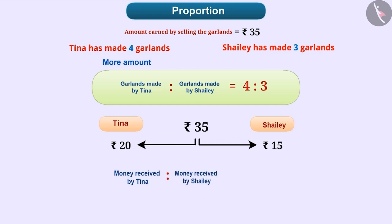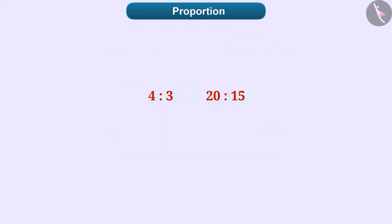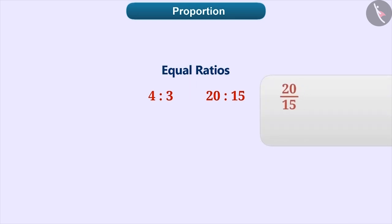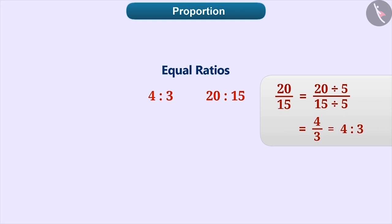Hence, the ratio of the amount received by Tina to the amount received by Shelly is 20 is to 15. Are the ratios 4 is to 3 and 20 is to 15 equal? Absolutely correct. If we divide the numerator and the denominator of 20 is to 15 by 5, then we get the ratio 4 is to 3. Therefore, we can say that 4 is to 3 and 20 is to 15 are equal ratios. That means they are in proportion. So, we can write the proportion as: 4 is to 3 is equal to 20 is to 15, or 4 is to 3 is proportionate to 20 is to 15.